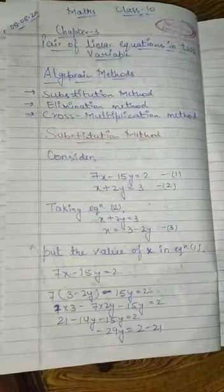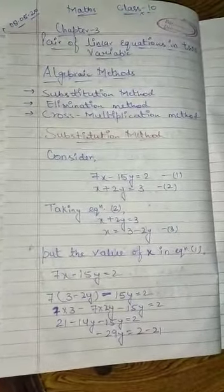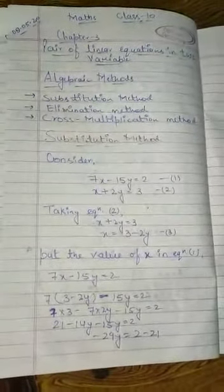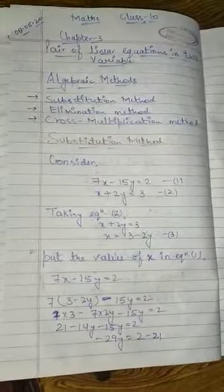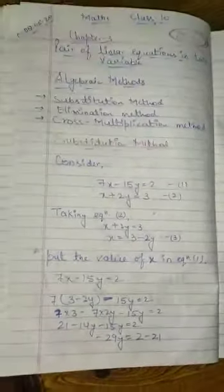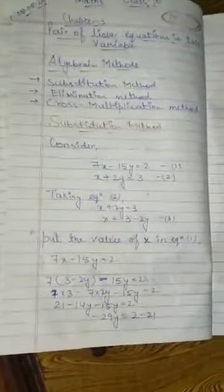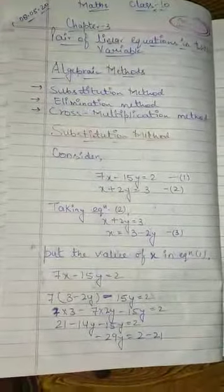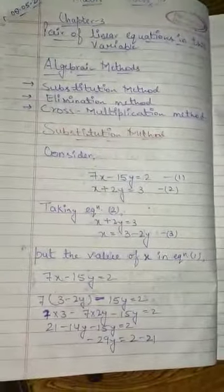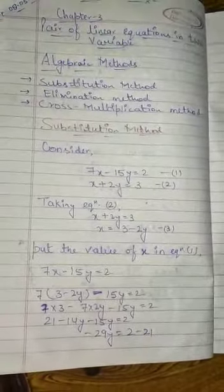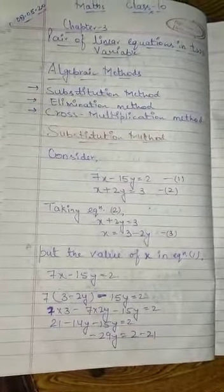Good morning class 10 students. After a long time, we continue with Chapter 3: Pair of Linear Equations in Two Variables. In this chapter, we've already done algebraic expression and graphical representation of two equations. Now we'll find solutions using three methods for the next three exercises: 3.3, 3.4, and 3.5.